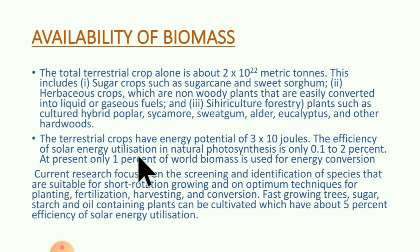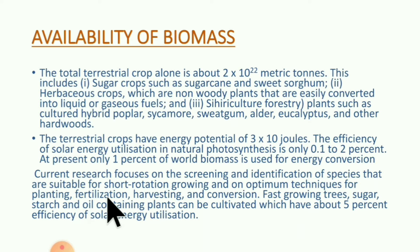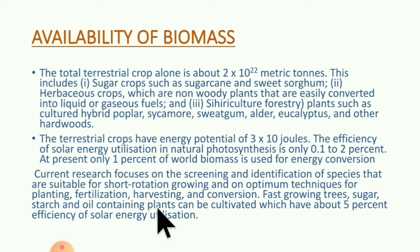At present, only 1% of world biomass is used for energy conversion. Current research focuses on the screening and identification of specific species that are suitable for short rotation growing, and on optimum techniques for planting, fertilization, harvesting, and conversion. Fast growing trees, sugar crops, and oil-containing plants can be cultivated which have about 5% efficiency of solar energy utilization.